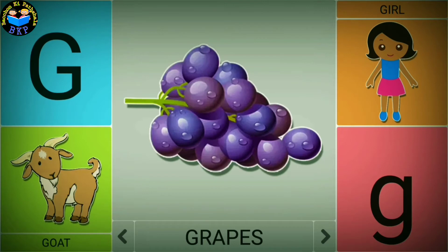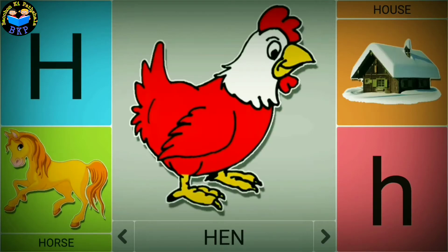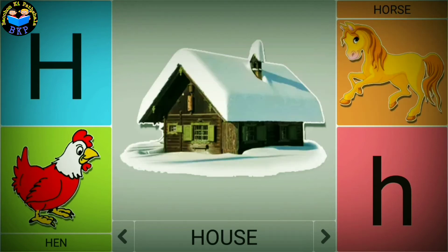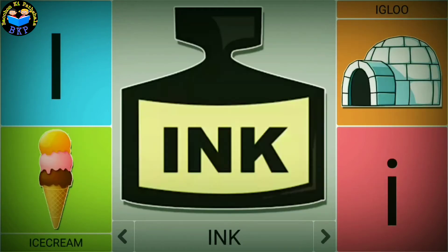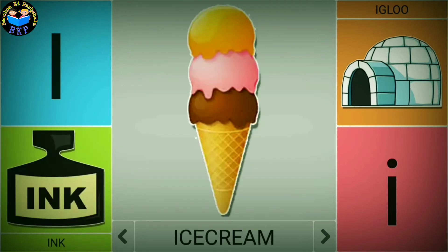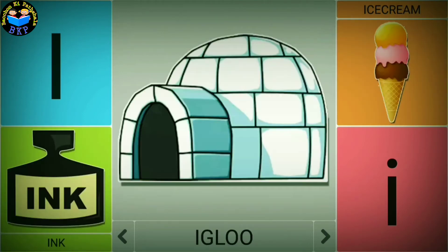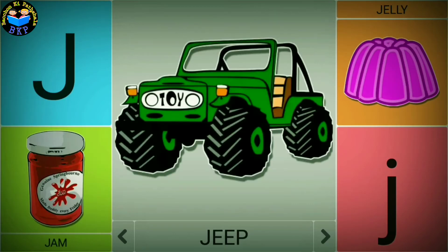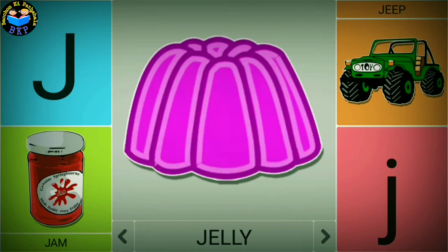G is for grapes. H is for hen. H is for horse. H is for house. I is for ink. I is for ice cream. I is for igloo. J is for jam. J is for jeep. J is for jelly.